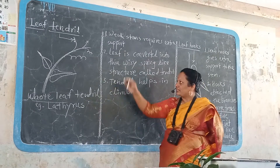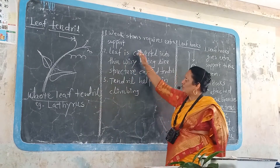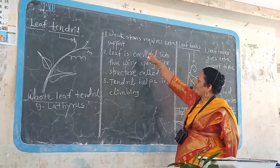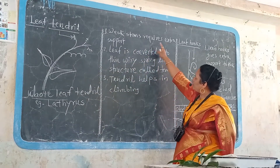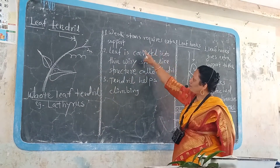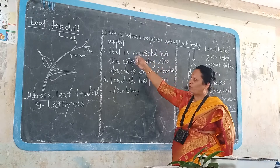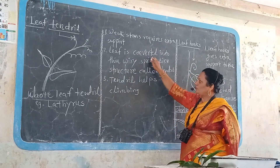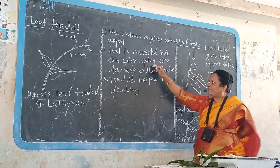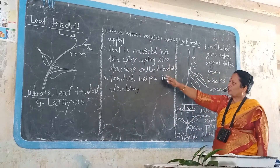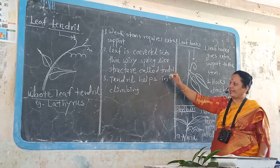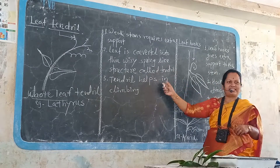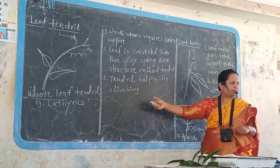The second modification: again, weak stems require extra additional support. The leaf is converted into a wiry spring-like structure called a tendril, and the tendril helps in climbing the stem.